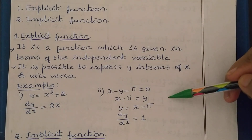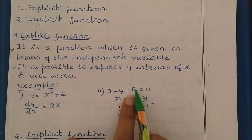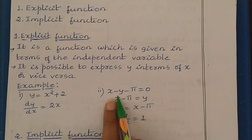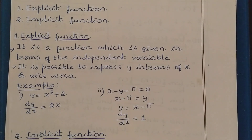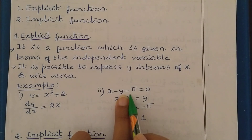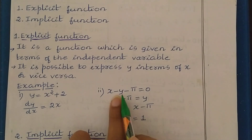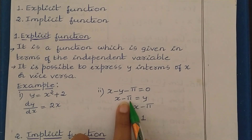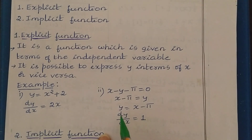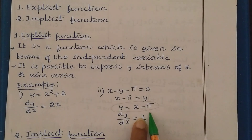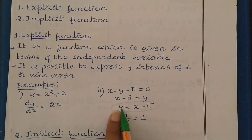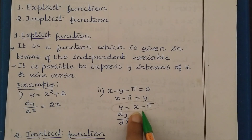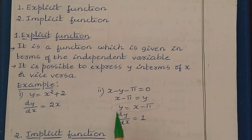Here I have taken another example: x minus y minus π is equal to 0. You can see here we have two variables x and y. The dependent and independent variables are not written on one side, but we can make changes such that — if we take y to the other side, we get y is equal to x minus π. Now in this equation, y is on the left hand side and x is on the right hand side, so y is the dependent variable and x is the independent variable. As the x value changes, the y value also changes.